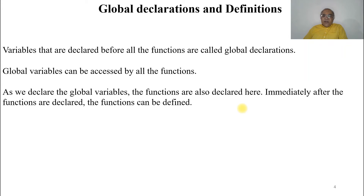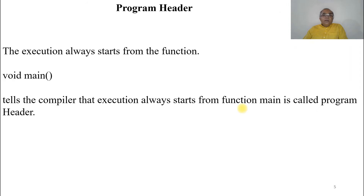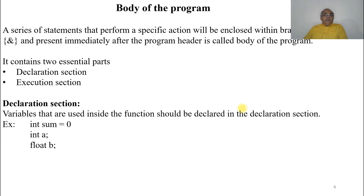Then comes the program header. Execution always starts from the function void main — this tells the compiler that execution always starts from main, which is called the program header. The body of the program is a series of statements that perform a specific action, enclosed within flower braces immediately after the program header, and is called the body of the program.